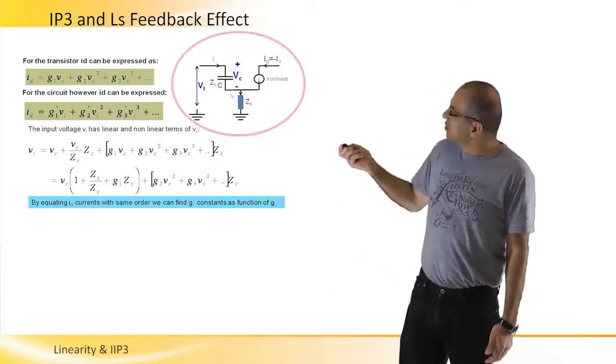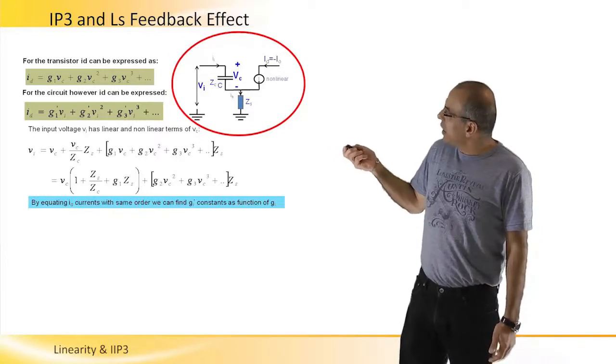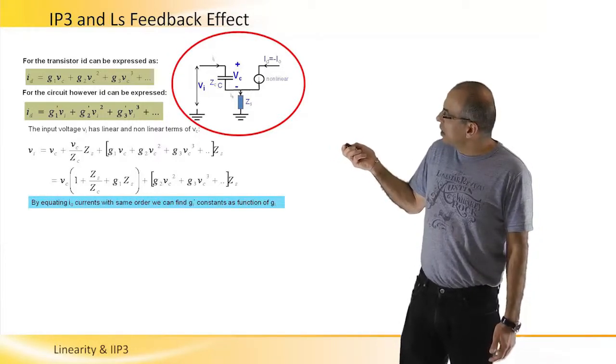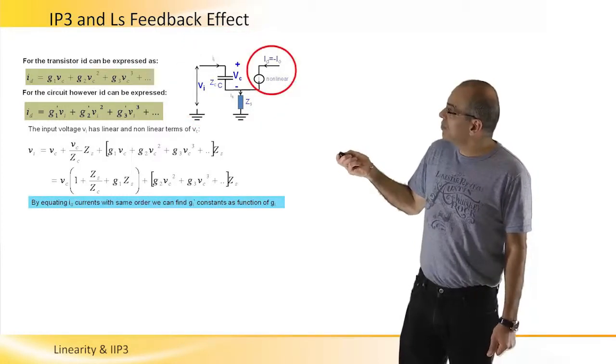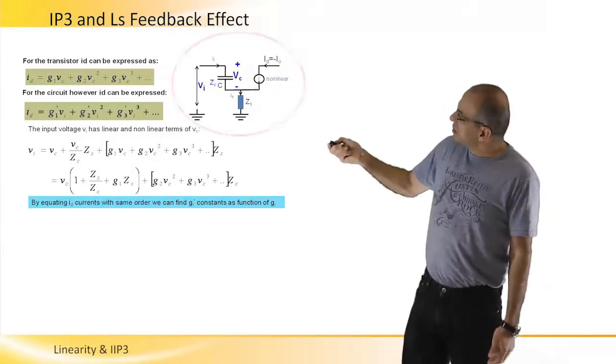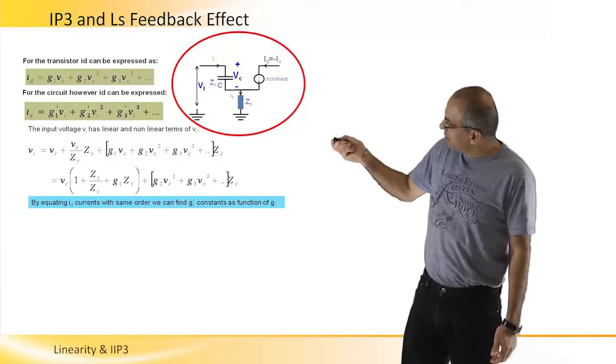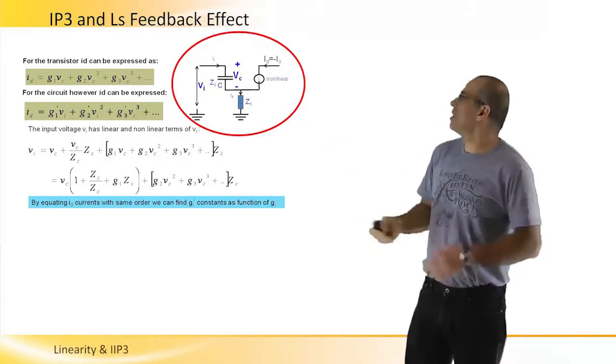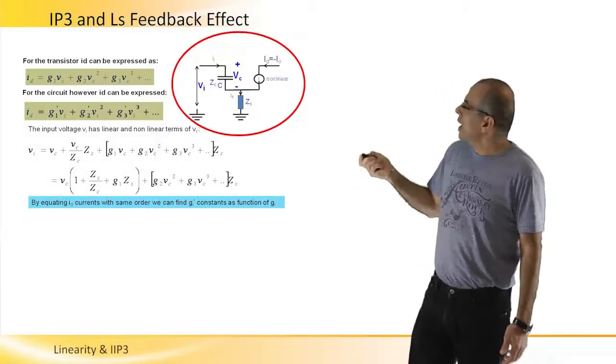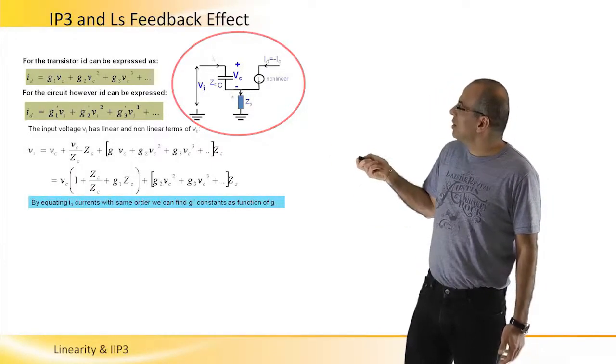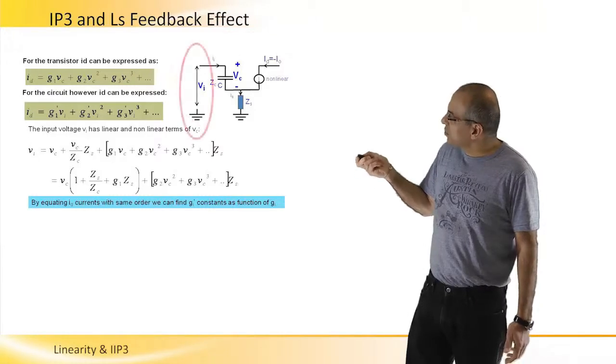And what we can do, we can do two things. We can look at the transistor standalone and just describe the current at the output as function of VGS. Or we can look at the whole amplifier as a nonlinear device, including the inductor and describe the same output current as a function of the input voltage.